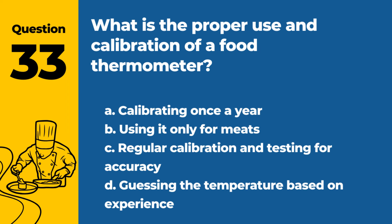Question 33. What is the proper use and calibration of a food thermometer? a. Calibrating once a year. b. Using it only for meats. c. Regular calibration and testing for accuracy. d. Guessing the temperature based on experience. Answer: c. Regular calibration and testing for accuracy. This ensures the thermometer gives accurate readings for safe food preparation.